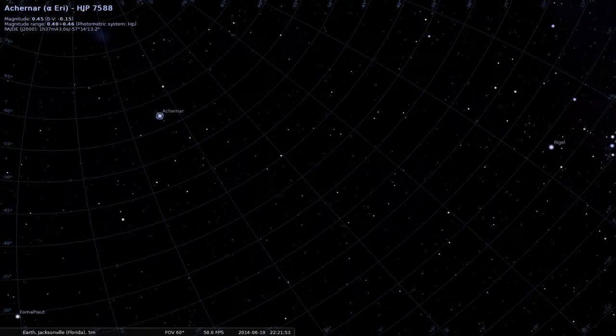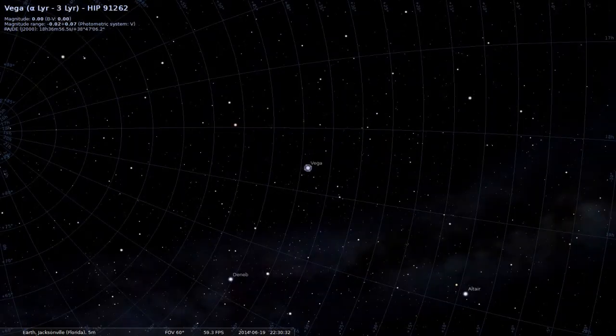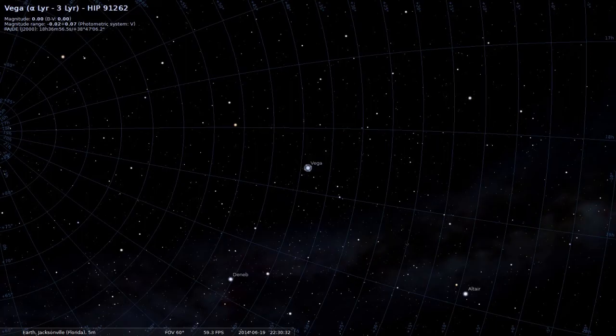So, the right ascension of Achernar, for example, is 1 hour, 37 minutes, 43 seconds. Vega is at right ascension 18 hours, 36 minutes, 56 seconds.